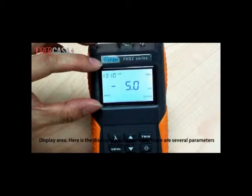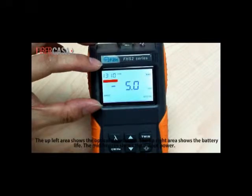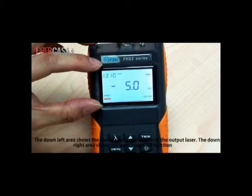Display Area. Here is the display area of the meter. There are several parameters shown on it. The upper left area shows the optical wavelength. The upper right area shows the battery life. The middle area shows the output power. The down left area shows the modulation information of the output laser. The down right area shows the auto power off function.